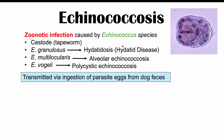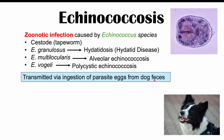We'll get into the pathophysiology and how this tapeworm is transmitted in more detail, but briefly, this infection is transmitted via ingestion of parasite eggs. These parasite eggs generally come from dog feces — often stray dogs, wild dogs, or even coyotes. We can also get infected from exposure to feces of other animals, including foxes.